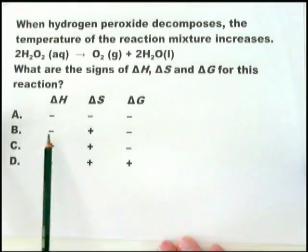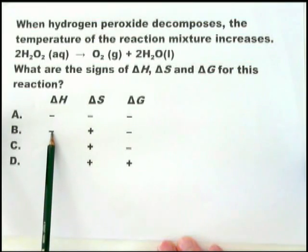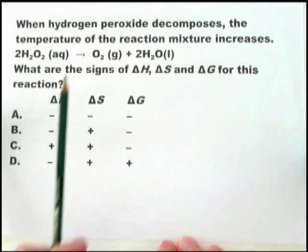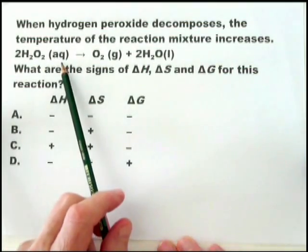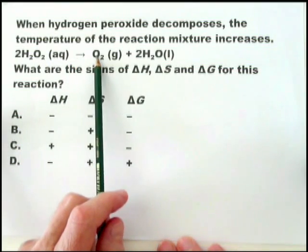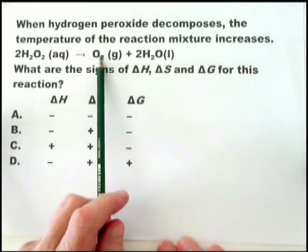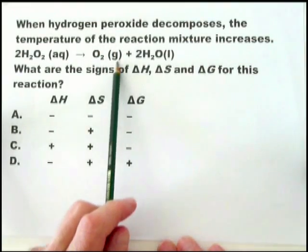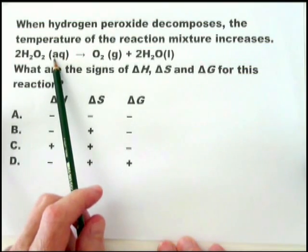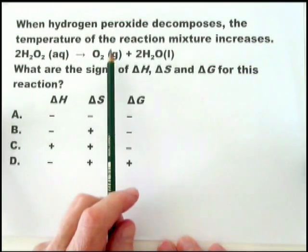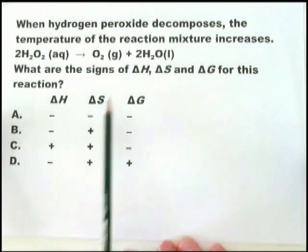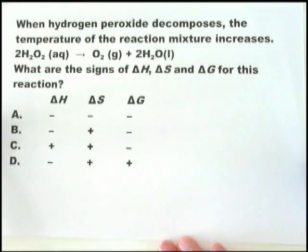So out of those three, the possibilities narrow to A and B. Then we look at the equation and see that as far as delta S is concerned, it is positive — because the delta S will increase. There's an increase in disorder simply because the reactant is aqueous and the product is a gas. That makes delta S positive. So the answer is B.